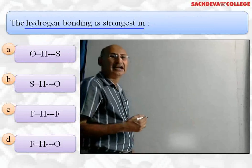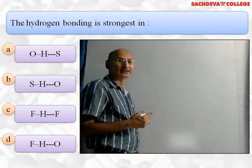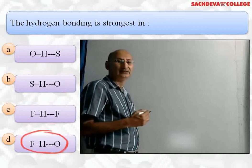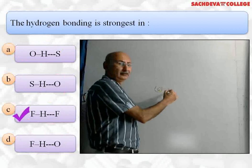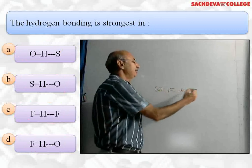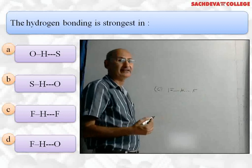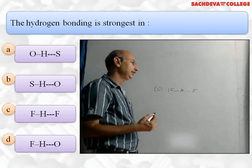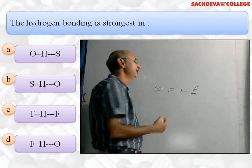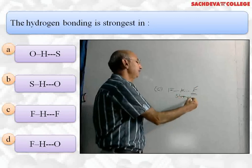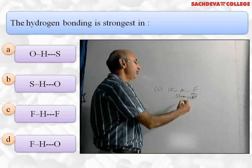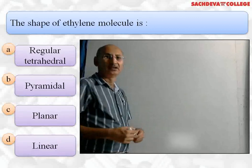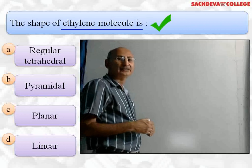Next question: in which of the following is hydrogen bonding strongest — O-H...S, S-H...O, F-H...F, or F-H...O? The correct answer is (c) F-H...F, because fluorine is the most electronegative atom and smallest in size among oxygen, sulfur, and fluorine. Being smallest in size and highly electronegative, it forms the strongest hydrogen bond. The strength of hydrogen bonding depends upon the electronegativity and size of the atom.